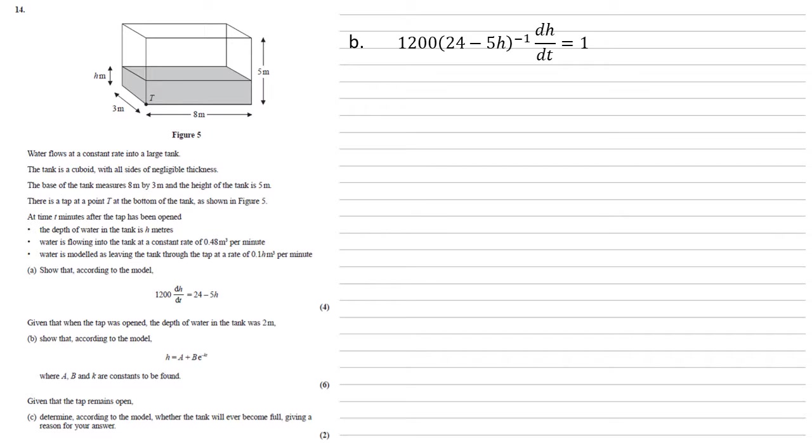And remember, because we've got the dh by dt on the left-hand side, the dt's will cancel out. So the left-hand side will end up as an integral with respect to h. And on the right-hand side, we've got the integral of 1 dt. On the left-hand side, I've brought my 1,200 out of the integral as a multiple. You could leave it inside. It's completely up to you. We now need to integrate 24 minus 5h to the minus 1.